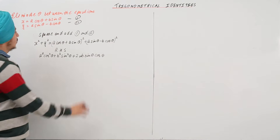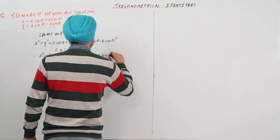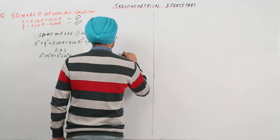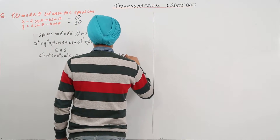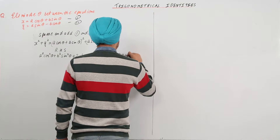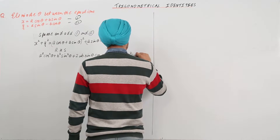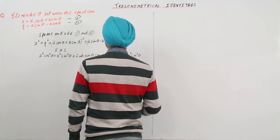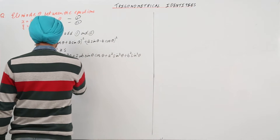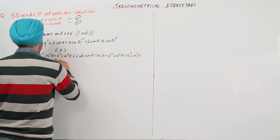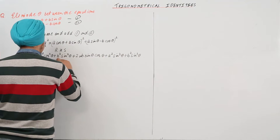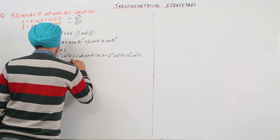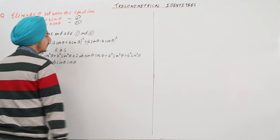Now, this second bracket becomes a square sin square theta plus b square cos square theta minus twice a b sin theta cos theta.